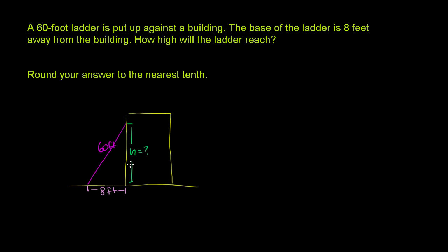Assuming this is a normal building built at a right angle to the ground, this triangle formed by the ladder, the building, and the ground is a right triangle. So the Pythagorean theorem will apply.